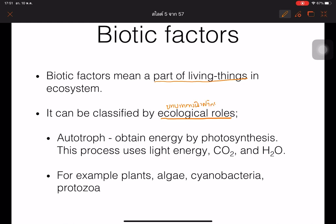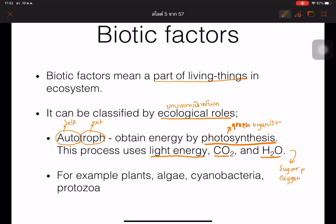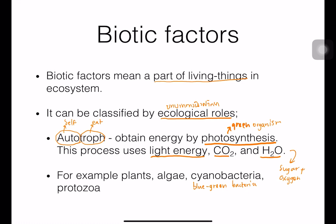For the biotic factors, we classify by ecological roles. For example, autotrophs — 'auto' means self and 'troph' means to eat, so they feed themselves. They obtain energy through photosynthesis. Green organisms use light energy, carbon dioxide, and water to produce sugar, and also produce oxygen gas as a byproduct. Green organisms include plants, algae, and cyanobacteria — a kind of blue-green bacteria.